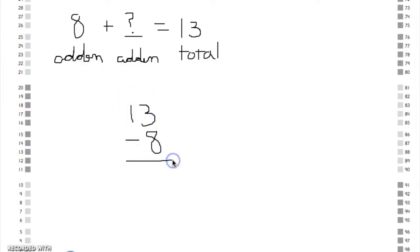If one add-in is unknown, it can be found by subtracting the known add-in from the total or by counting on from the known add-in to the total.